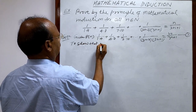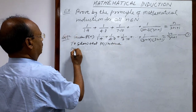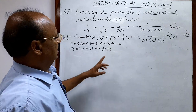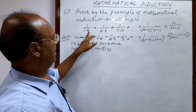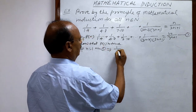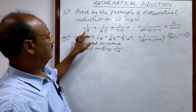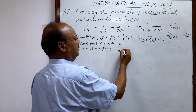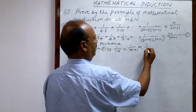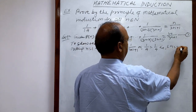Let us start with the first step. We have to prove that P(1) is true. Putting n=1 in relation number 1, we take only the first term, which is 1/(1×4). The right-hand side with n=1 gives 1/(3×1+1) = 1/4. So we are getting LHS = 1/4 = RHS = 1/4.